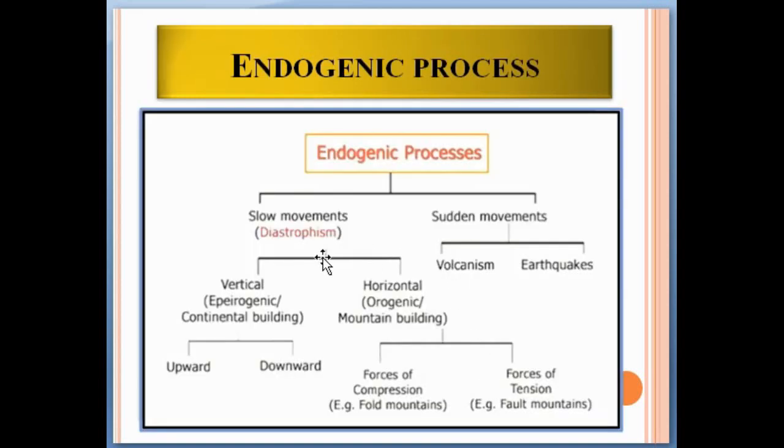Endogenic processes are of two types: slow movements (diastrophic) and sudden movements. Slow movements involve vertical or epeirogenic continental building, and horizontal or orogenic mountain building. Sudden movements involve volcanism and earthquakes. Mountain building or orogenic cycles involve two processes: forces of compression and forces of tension. These forces are involved in folding and faulting.